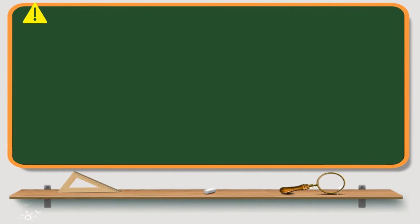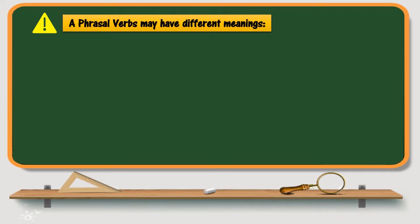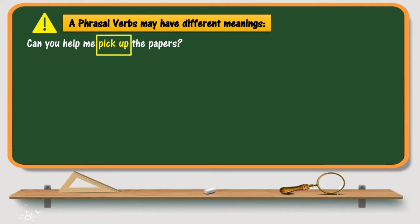An important thing you should know about phrasal verbs is that the same phrasal verb may have different meanings. For example, the sentence 'Can you help me pick up the papers?' — the phrasal verb pick up here has a literal meaning, which is to collect or to take something from the ground.